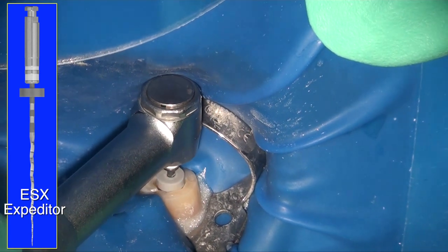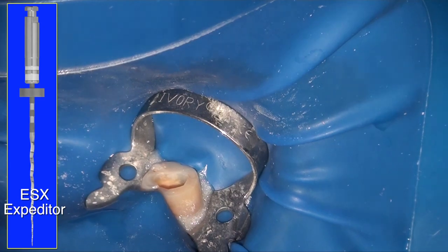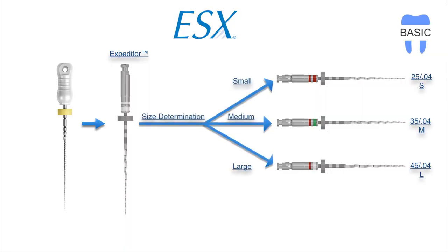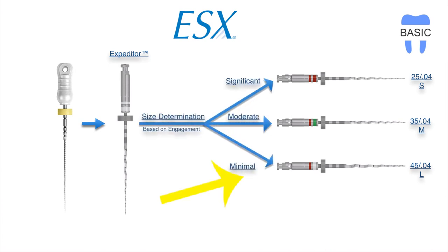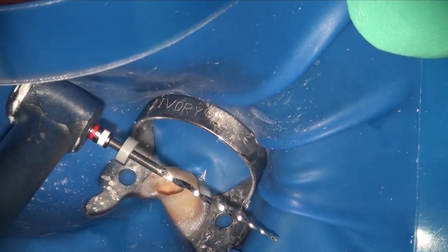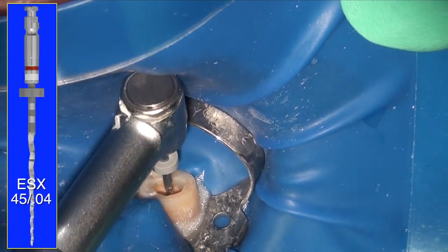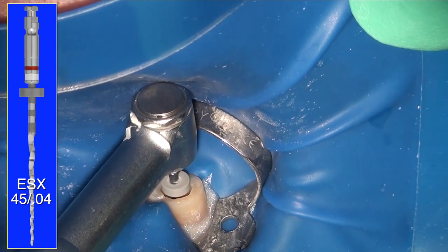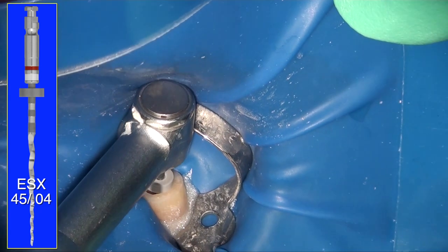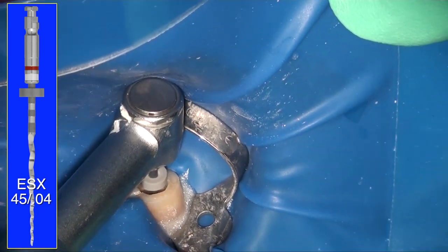I've put my ESX expediter to 22mm, and right off the bat with minimal resistance it goes all the way down to the full working length. From our protocol — if you recall our technique card — if you have minimal engagement of the expediter, you would use a size 45. So we go straight to a size 45 from the 15.05 expediter. You can see that the 45, right off the bat with the BT tip, goes down to the end of the root at the full working length.